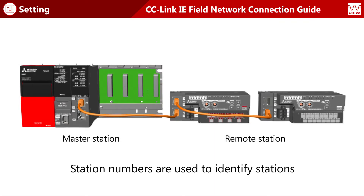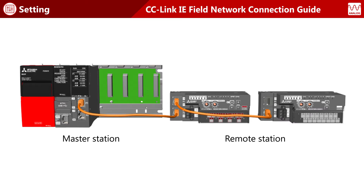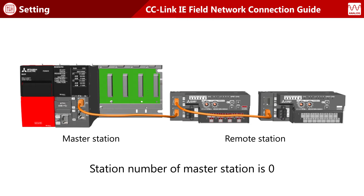Just as individual telephones are assigned telephone numbers for identification, station numbers are used to identify stations. The system shown here is configured with three stations. The station number of the master station is fixed to zero.